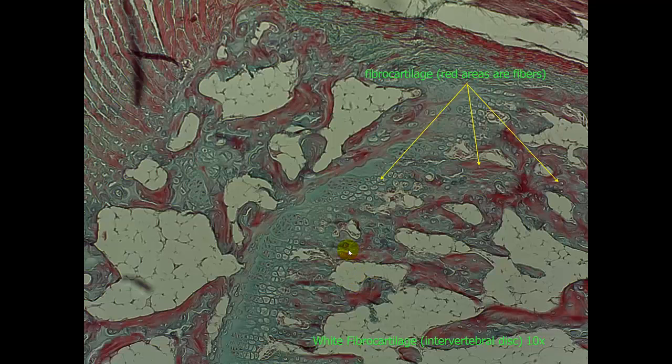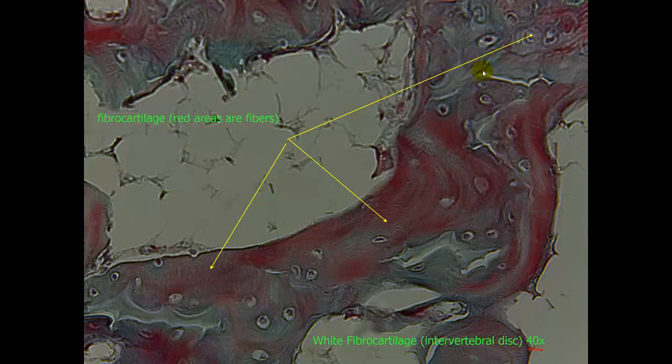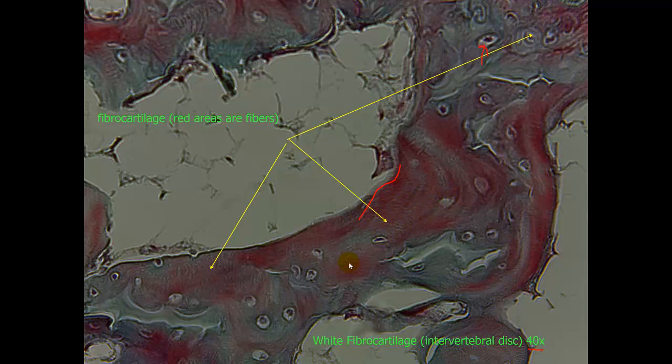Here is white fibrocartilage. Now this slide was probably stained differently than yours. We can see each of these round clear areas is a lacunae. And each of the dark stained areas is the fibers themselves. This slide is said to be differentially stained so that we can see the fibers easily. This is from an intervertebral disc at 10x magnification. Closer look. This is a 40x of the same tissue. We can clearly see the lacunae that is housing the chondrocytes. And each of these red areas are the fibers themselves. You will see a lot of fibers within the fibrocartilage. Notice that they are running in all different directions because they have to manage stress within all different directions that is placed within the intervertebral disc.